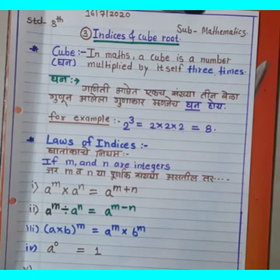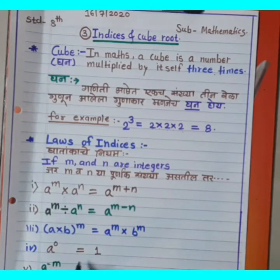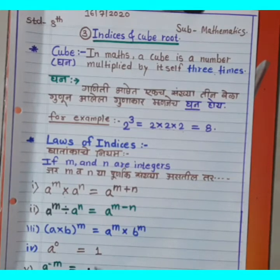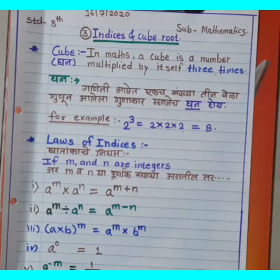Fifth Rule: A raise to minus M is equal to 1 over A raise to M. That is, A^(−M) = 1/A^M.